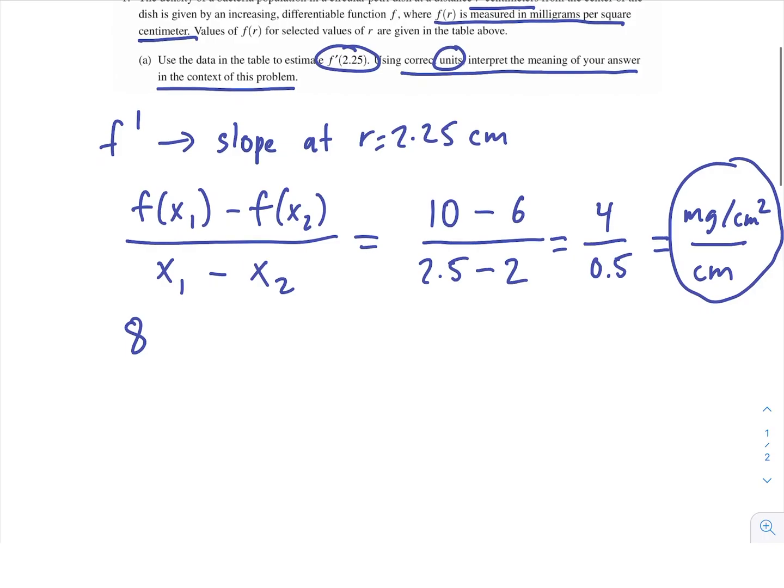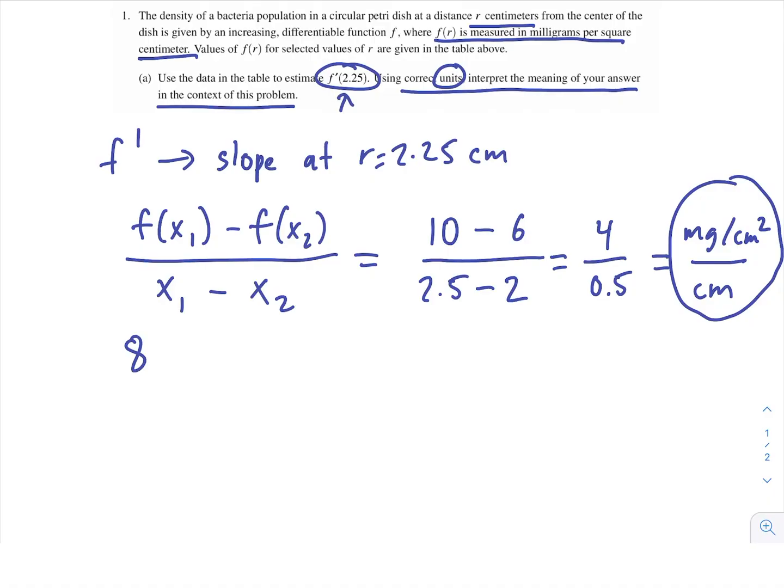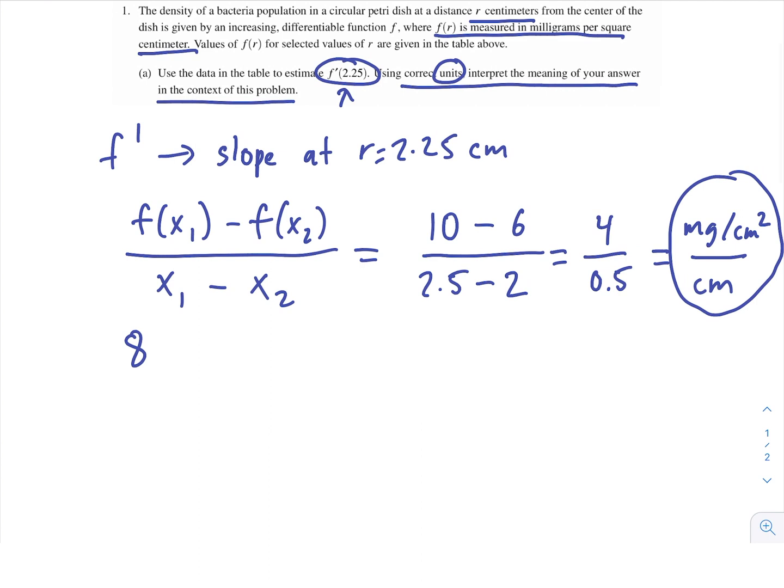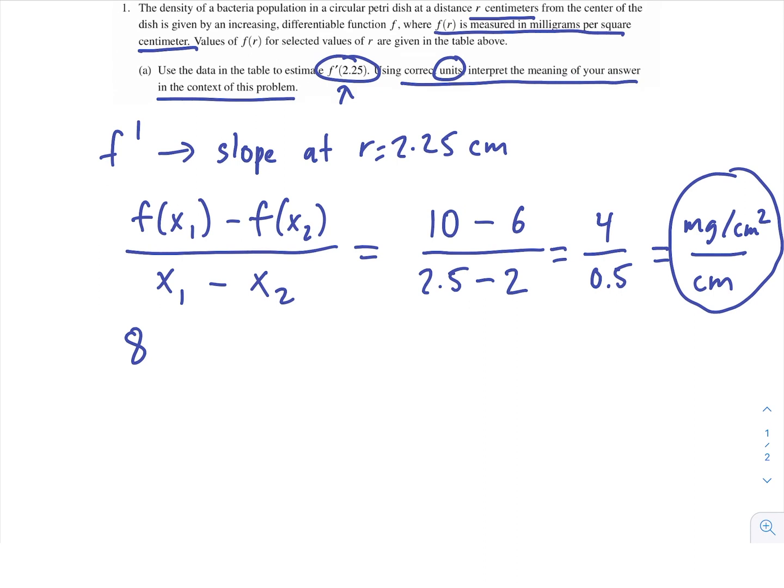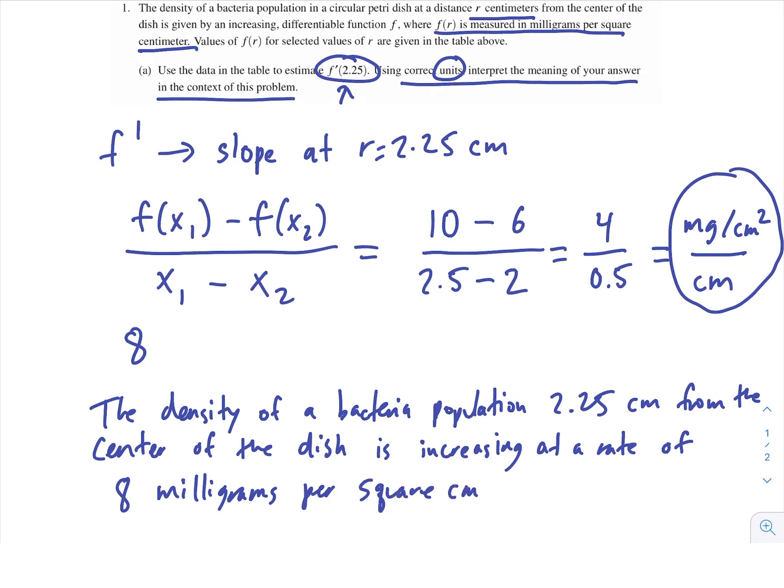But we're going to write it out in sentence form. And you want to include every single part of the answer. So just saying that it's 8 milligrams per square centimeter per centimeter would not technically be correct because we want to also include the fact that we're 2.25 centimeters from the center of the dish. So it's good to be verbose here, but make sure you're actually saying the right thing. So for this problem, what I would say is the density of a bacteria population, 2.25 centimeters from the center of the dish, is increasing at a rate of 8 milligrams per square centimeter per centimeter.